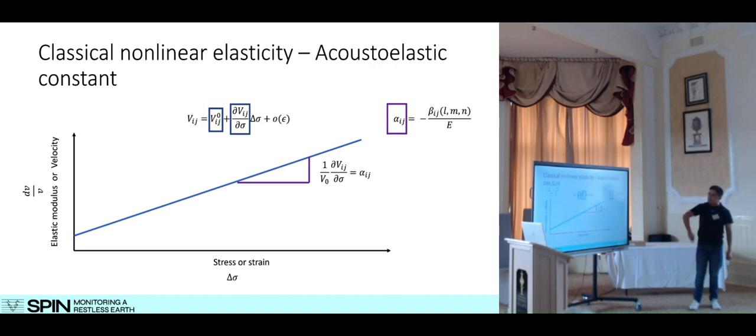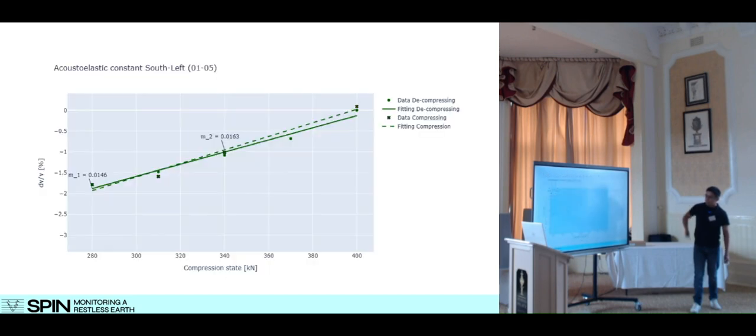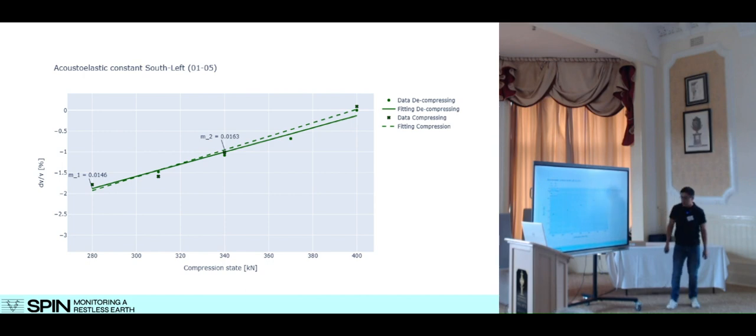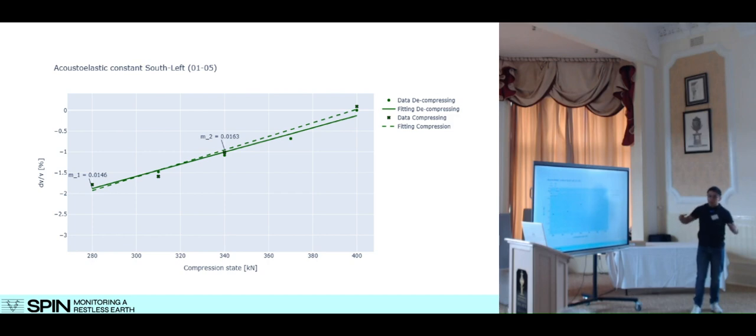I'm going to estimate this quantity using dv over v and changes in stress. And this is the thing that we have here: vertical axis dv over v, horizontal axis compression states. This is the information that we estimated when we release the pretension in the structure. This is the fitting that I obtained, therefore the acoustic elastic constant. Now this is the information that I obtained when we compress again the structure, and we can obtain another different acoustic elastic constant. So at each location, we can estimate two different acoustic constants.